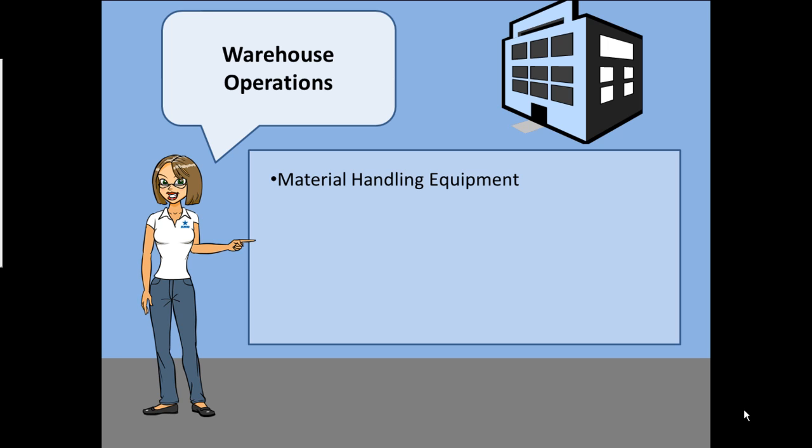Remember the example used earlier with the forklift and widgets? Well, that's what we call material handling equipment. A warehouse must use the proper equipment to move products and goods in the most timely and cost efficient manner possible.